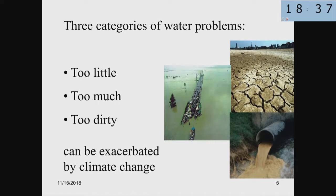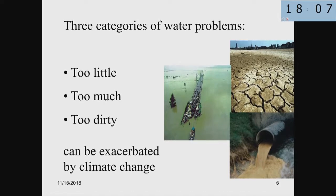The pollution problem has very important meaning in terms of quality of drinking water. About one in nine people on earth does not have access to safe, clean drinking water. Moreover, pollution is related to droughts and floods. Even if dilution is not a solution for pollution, without much water we cannot dilute wastewater, so it is important to have water for dilution.